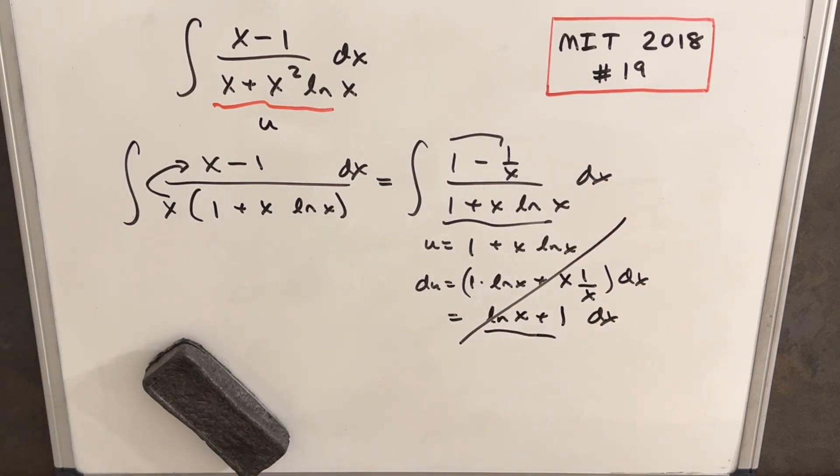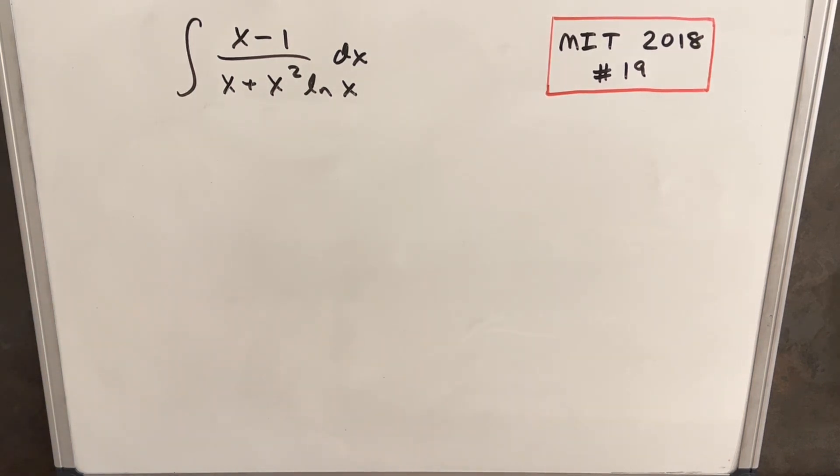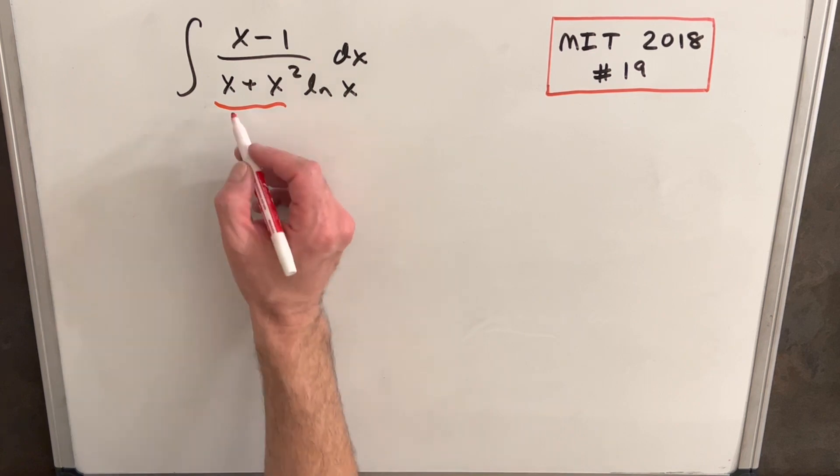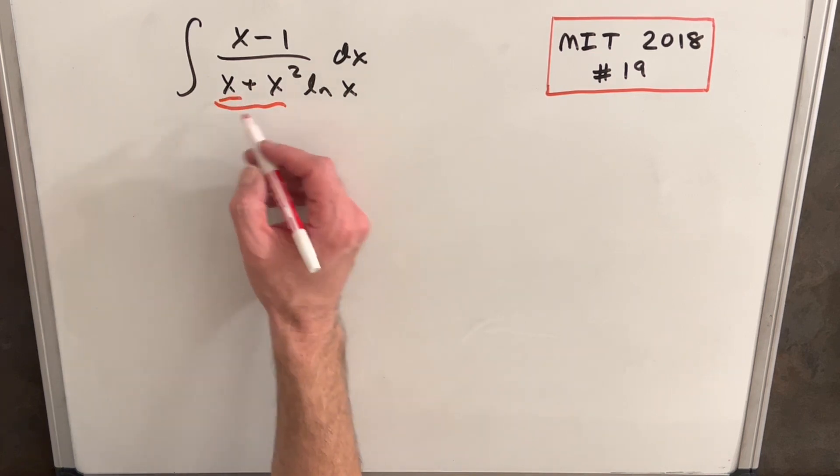This kind of feels similar to a problem I did not too long ago, like maybe a few minutes ago, actually I think it was MIT 18. Anyway, when we have two x's in the denominator, you kind of have a choice, right? We factored out x and that didn't work, but let's try factoring out x² and see if that works out better.